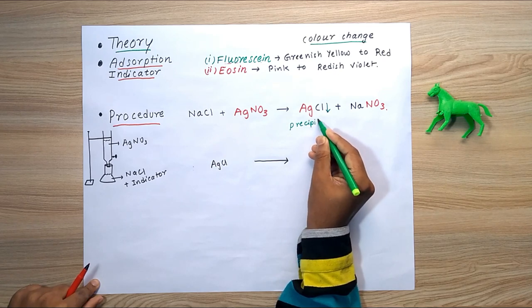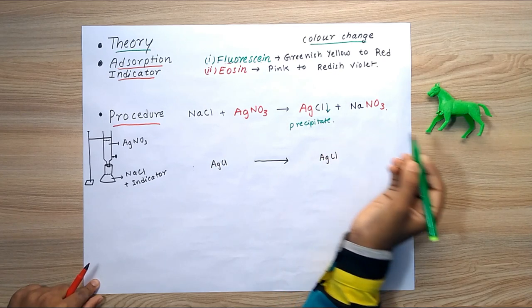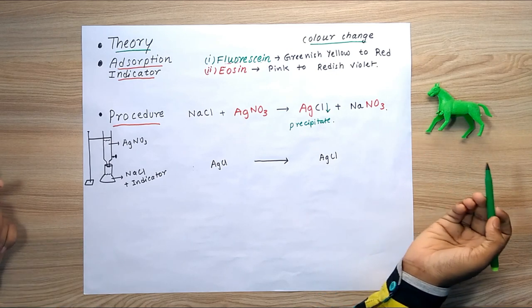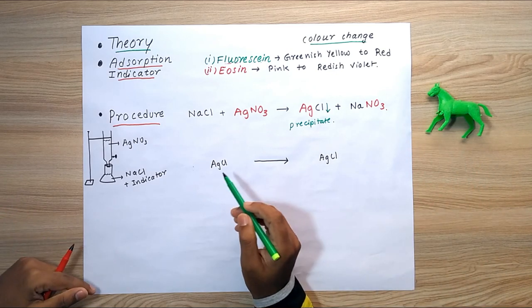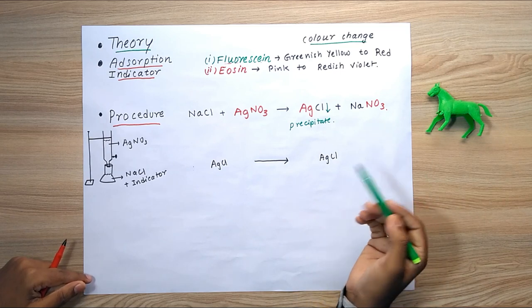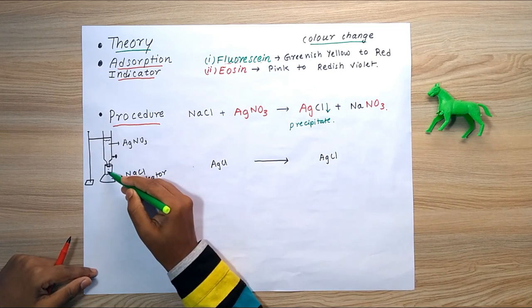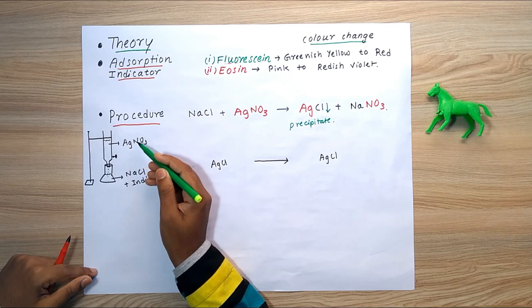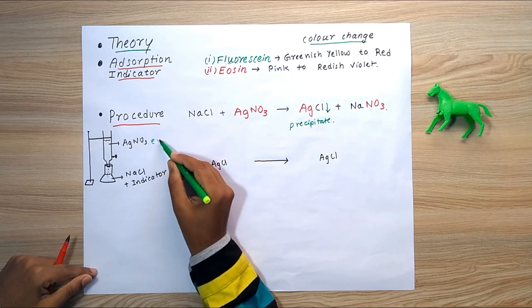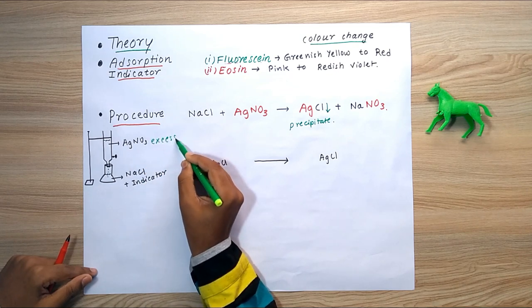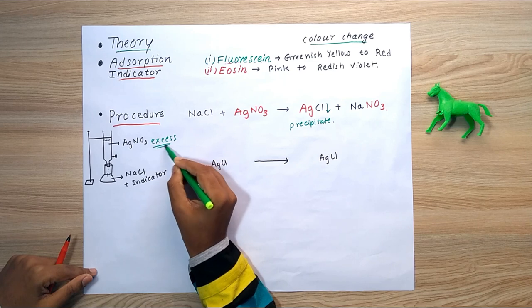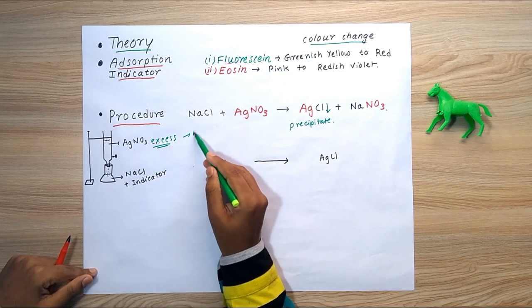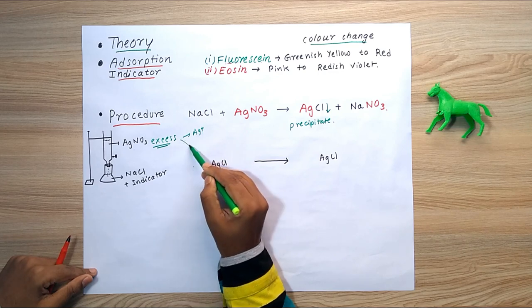This precipitate forms at the bottom of the beaker, and NaNO3 is our byproduct. What causes the color change in the solution is that when we drop an excess amount of AgNO3 into the solution after the displacement reaction, this excess AgNO3 dissociates.